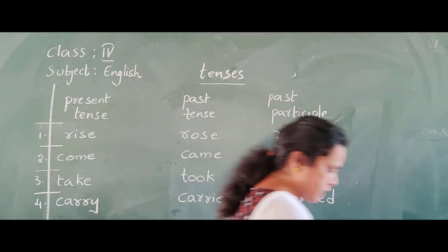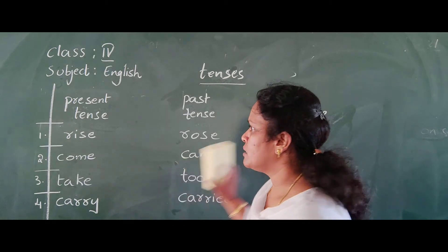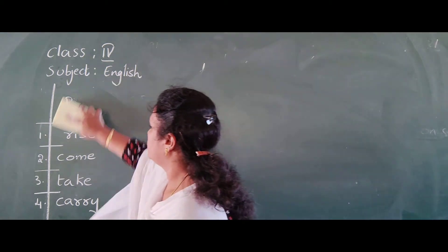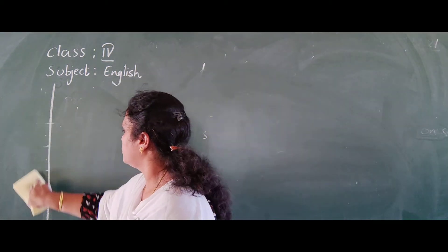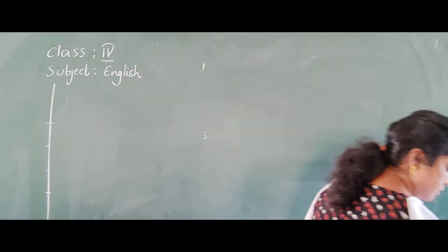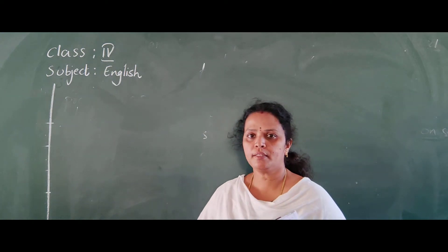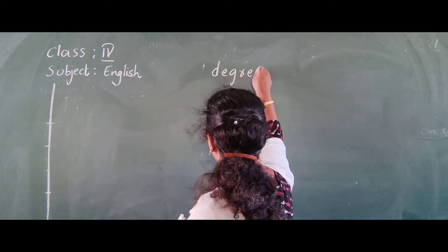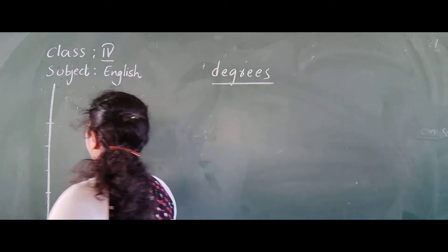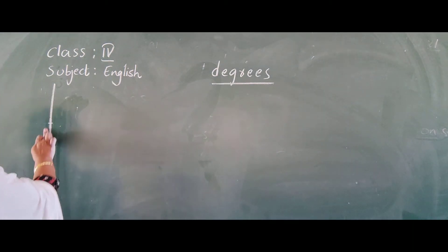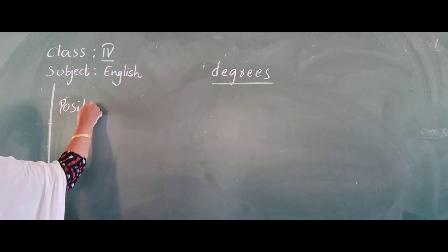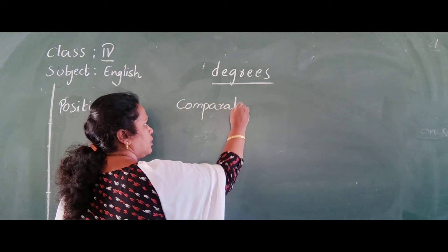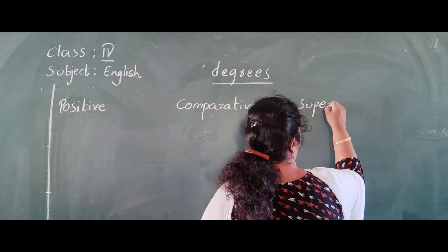And later, Degrees of Comparison — three types: Positive, Comparative, and Superlative. I hope you are all now thorough in writing the degrees, because in third class you did not have degrees of comparison. Last two lessons I told you how to write -er and -est. Remember that.